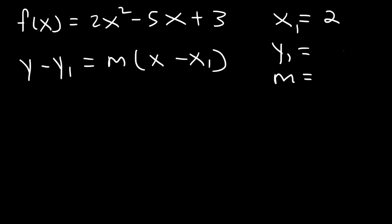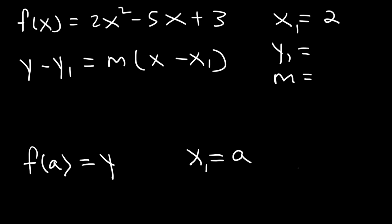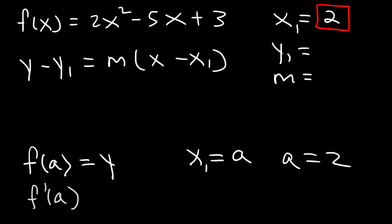To find the y coordinate, we simply take x and plug it into this equation. f of a is equal to y, where a is a specific value of x. In this example, a is equal to 2. x can be anything — x can be 5, 7, 12 — but a is that specific value of x. So f of a is y, and f prime of a is equal to m. To find m, you find the first derivative and then replace x with 2. To calculate y, replace x with 2 in the original function f of x.